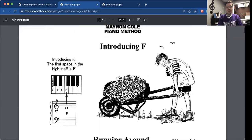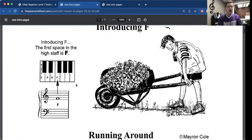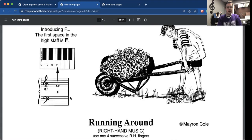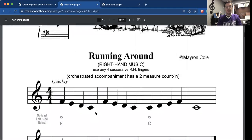Now F, we've already covered in a previous chapter, but we're going to put that on the staff here, and it is on space number one. So right there, that's space number one, which is the bottom space of the treble staff. That's what we're going to be throwing into the mix here for running around.